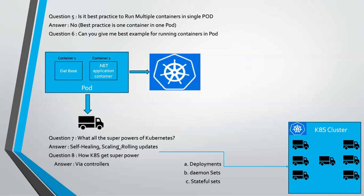As the name indicates, self-healing heals automatically. Scaling means, for example, if you have seven pods running in a Kubernetes cluster, you can create hundreds or thousands of copies of that same pod inside the cluster — that is scaling. Whenever users of your application keep increasing, you can easily scale up with multiple pods, which helps with load balancing and performance.